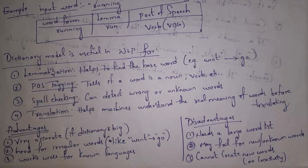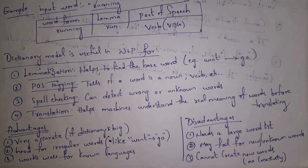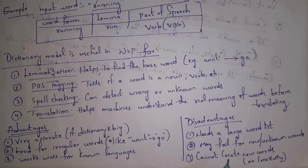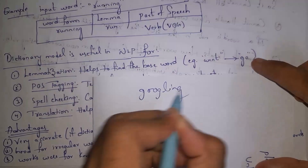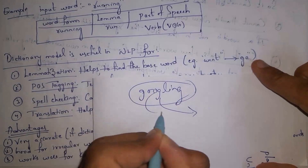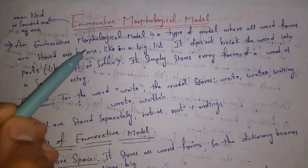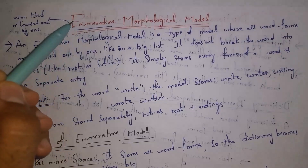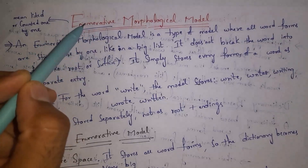The disadvantages of the dictionary-based morphological model are: first, it needs a large word list — the dictionary only contains meanings for known words, so if you give it an unknown word, it may fail to give an answer. Second, the dictionary cannot create new words — for example, 'googling' means searching something on Google, but the dictionary may not have this meaning, so it lacks creativity.